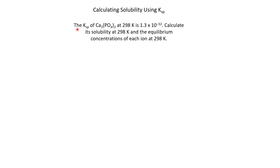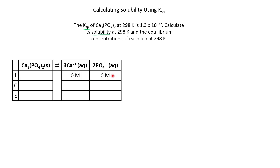Let's do the reverse. This problem reads: the KSP of calcium phosphate at 298K is 1.3 × 10⁻³². Calculate its solubility at 298K and the equilibrium concentrations of each ion. It's really important to differentiate solubility from KSP. We have the KSP — that is our equilibrium constant. Our solubility is our equilibrium position, which is going to be our X value. Let's set up our ICE table. Initially, we have no calcium and no phosphate. We know this is going to shift to the right to form some ions, so for our change we're going to have 3X and 2X — the 3 comes from the coefficient 3 and the 2 from the coefficient 2. Our equilibrium concentrations are 3X and 2X.